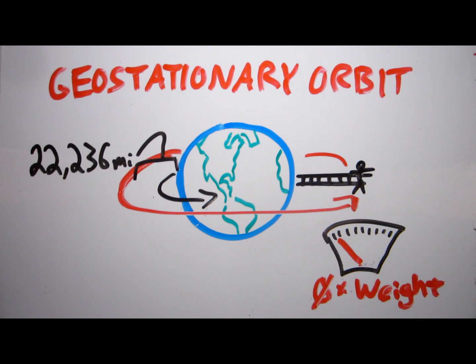A geostationary orbit is often used for communications and weather satellites, so that they always appear in the same place in the sky, and their movements don't need to be tracked in order to communicate with them.